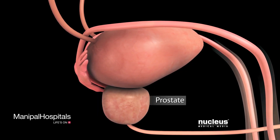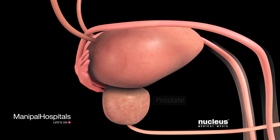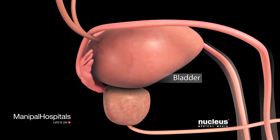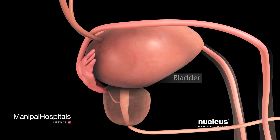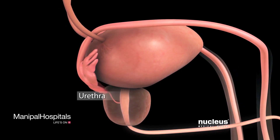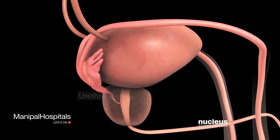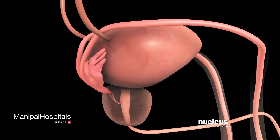Your prostate gland is located just beneath your bladder. Passing through your prostate is the urethra, the tube through which urine exits your body.